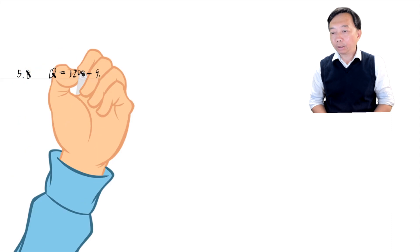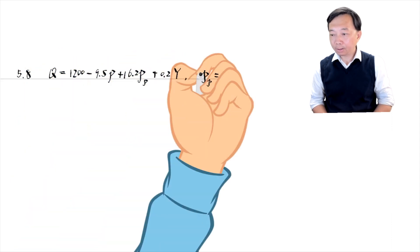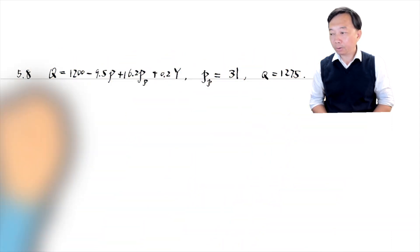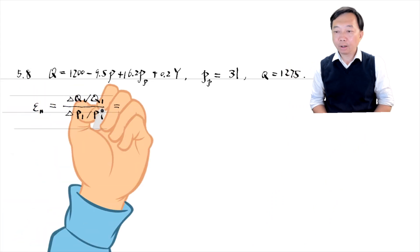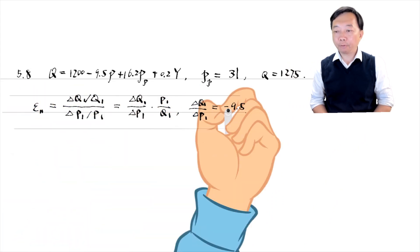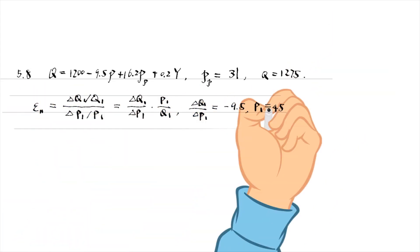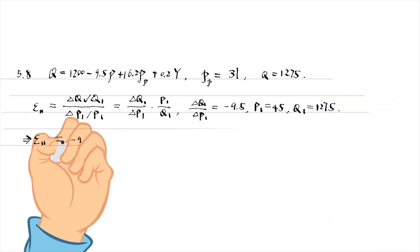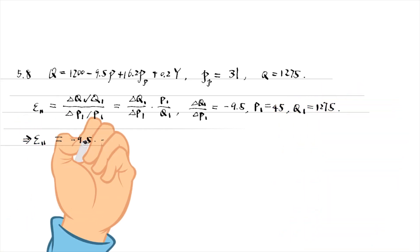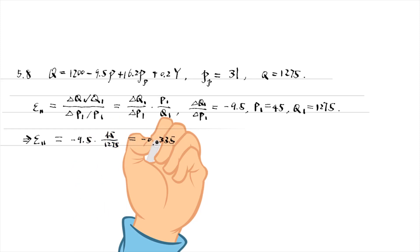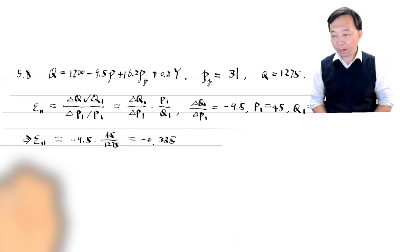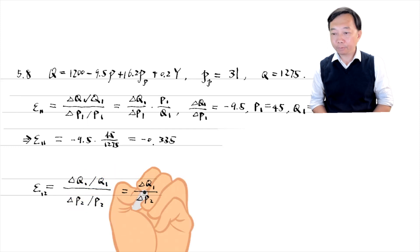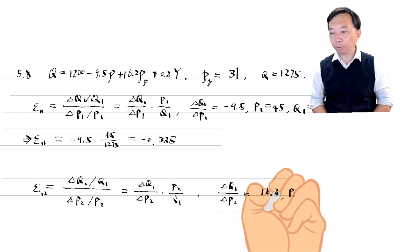For the own price elasticity of demand, we substitute all the values into the formula and get minus 0.335. For the cross-price elasticity of demand, we have the answer of 0.394.